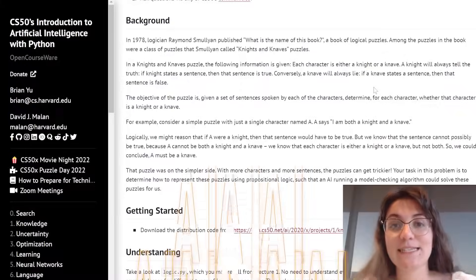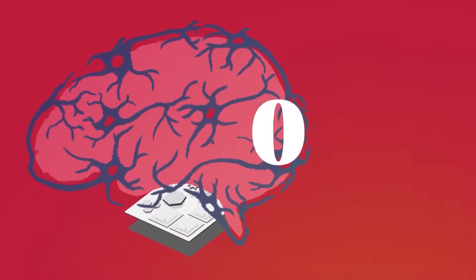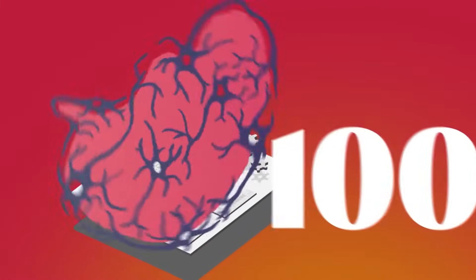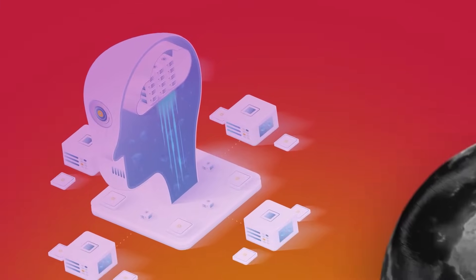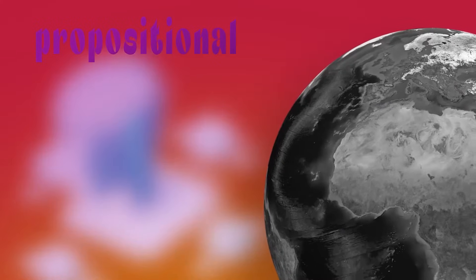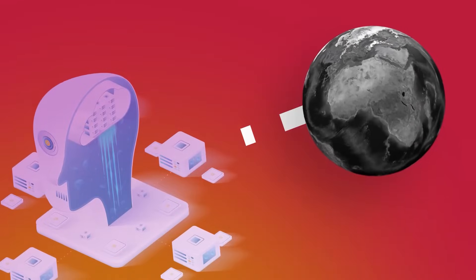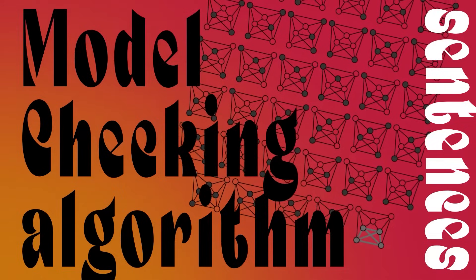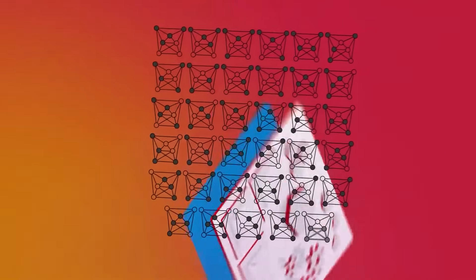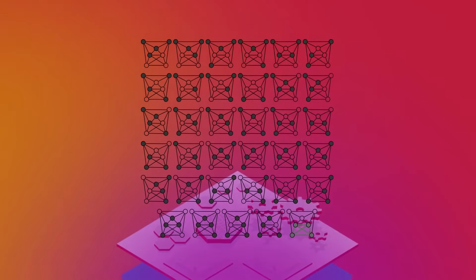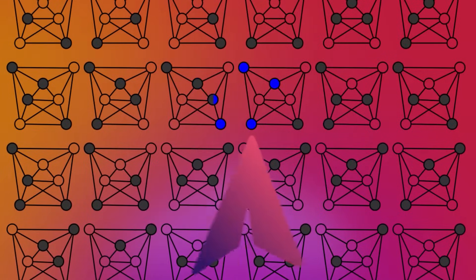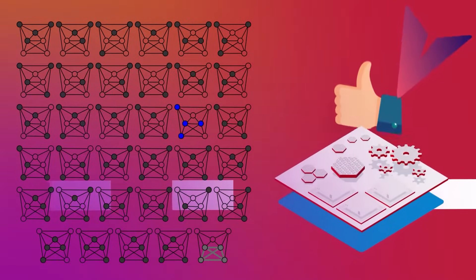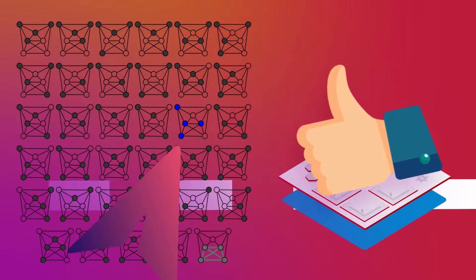Right now, let's understand what we have in our hands. The knowledge base is all the information that we know — the knowledge that the AI is provided about the world in the form of propositional logic sentences that can be used to make additional inferences about the world. Inference is a process of deriving new sentences from old ones. In this project, we will use the model checking algorithm.